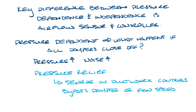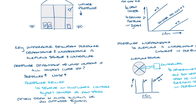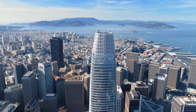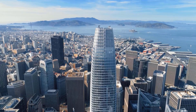Most systems you see today are going to be pressure independent, but you may run into older systems or possibly VAV diffuser systems that are pressure dependent. That's the difference between pressure dependent and pressure independent. Don't forget to like and subscribe to our YouTube channel, and thanks for watching.